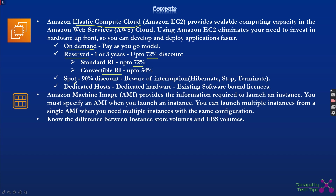Spot instances provide up to 90% discount but work on a bidding model — you bid for a specific price and when the market hits that price you get the instance. However, AWS will stop the instance whenever the market price goes above your bid price. The fourth option is dedicated host, which provides dedicated physical hardware to you, useful if you have existing hardware-bound licenses.